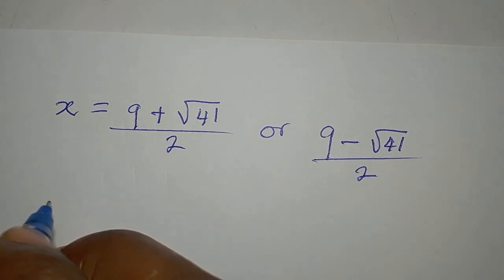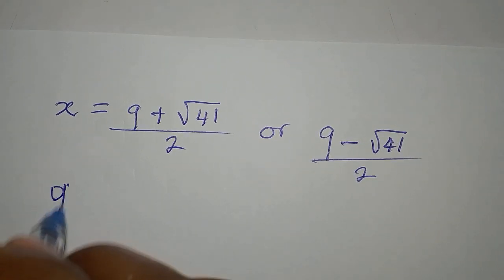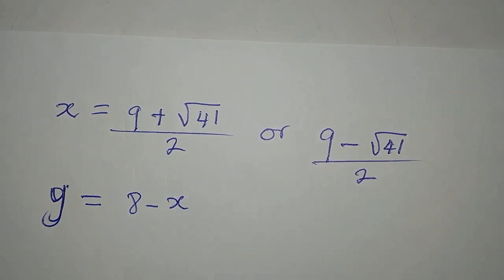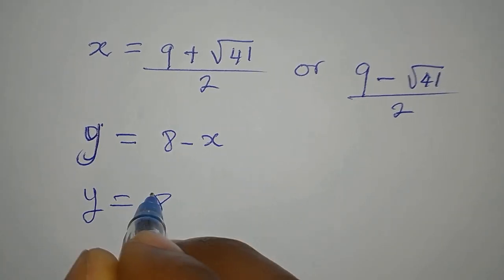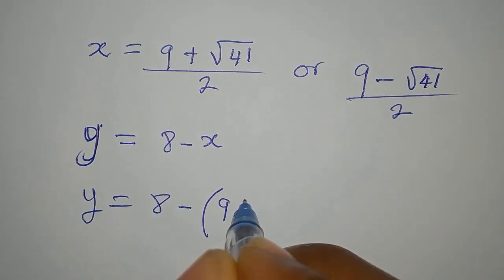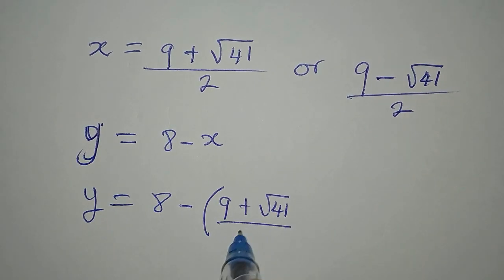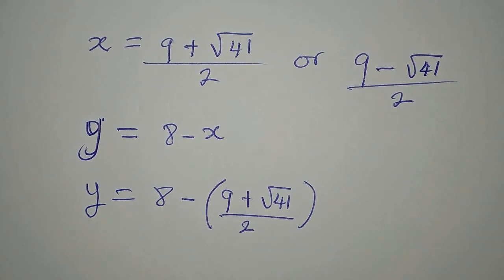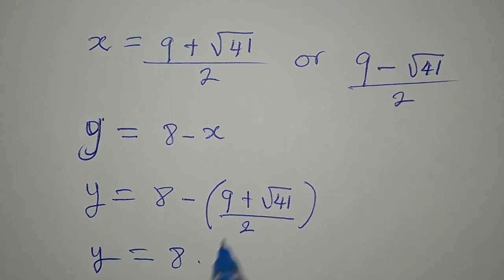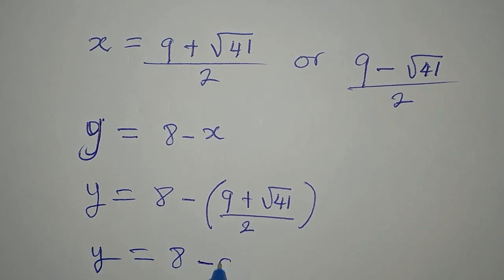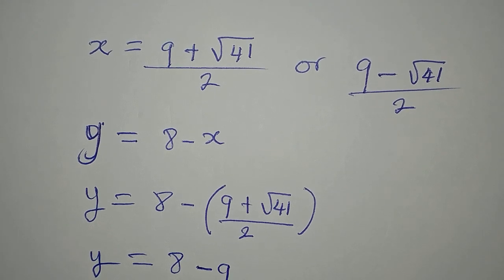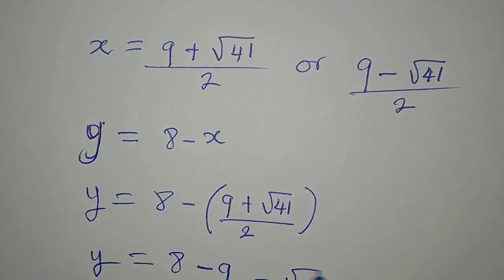Our equation 3 is y equals 8 minus x. So now y will be 8 minus open bracket 9 plus square root of 41 over 2, we'll close the bracket. And y will be equal to 8. We'll open this bracket so we have minus 9 over 2.